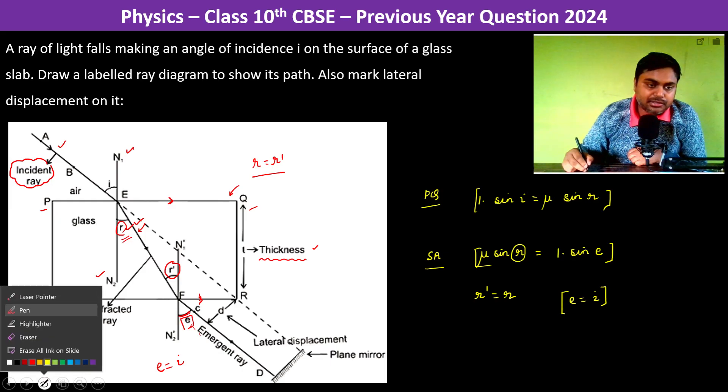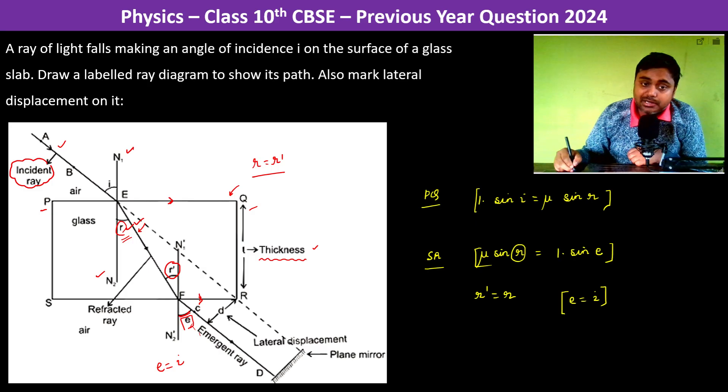So that means the rays emerge parallel to the original ray. This was the original ray, the dotted ray, so this emerges parallel to it.